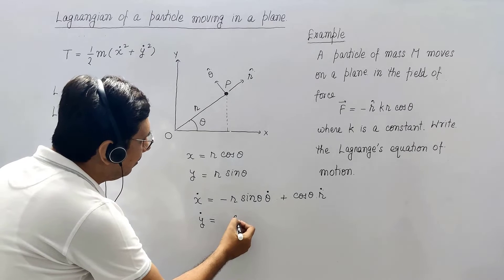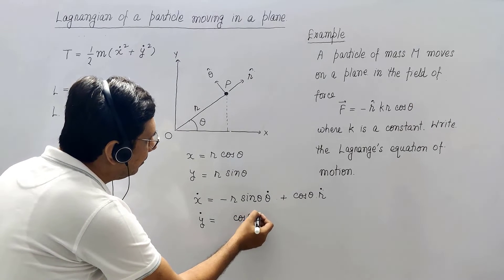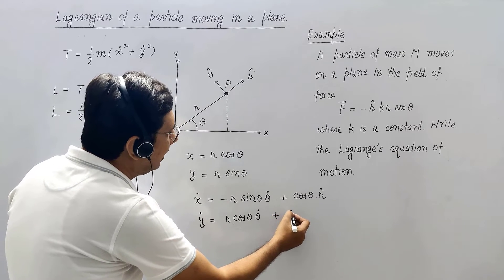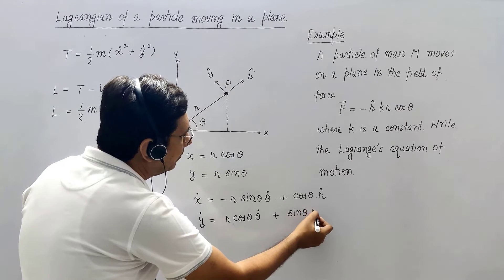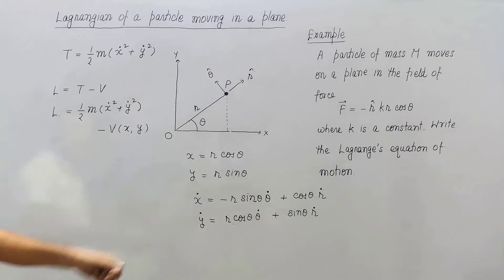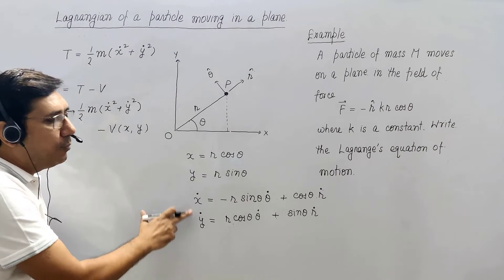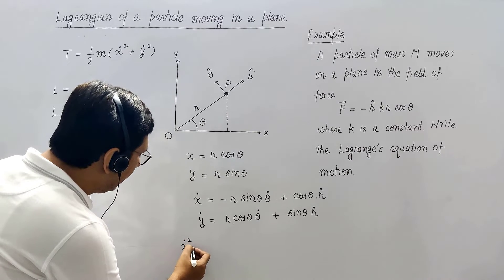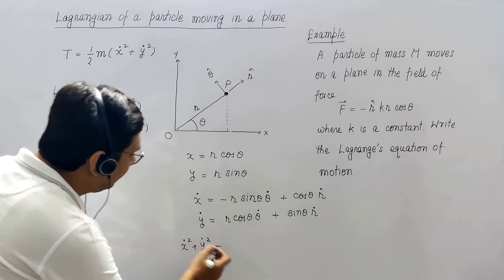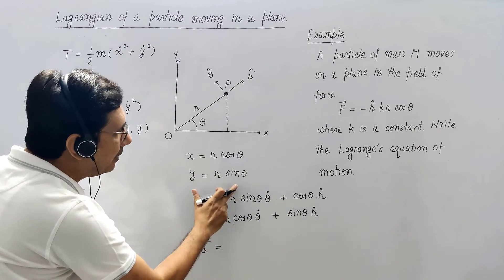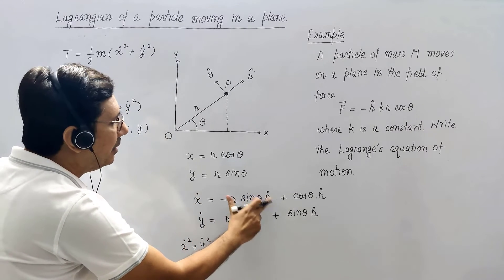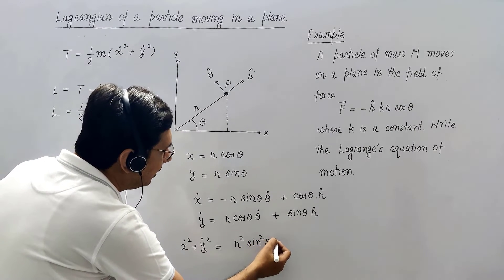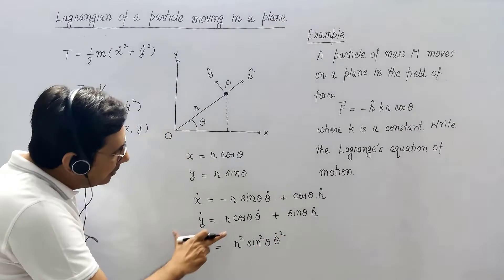Similarly, differentiating y = r sin(theta): y-dot = r cos(theta) theta-dot + r-dot sin(theta). Now squaring both and adding them: x-dot squared plus y-dot squared. The first terms give r squared sin squared(theta) theta-dot squared plus r squared cos squared(theta) theta-dot squared, which equals r squared theta-dot squared.